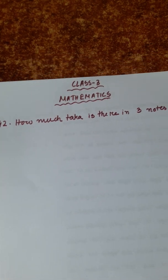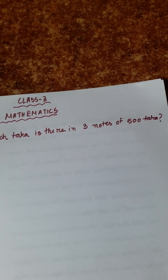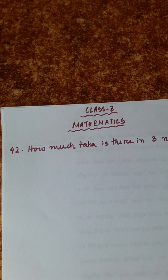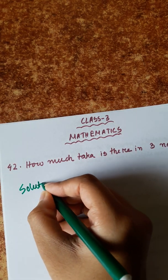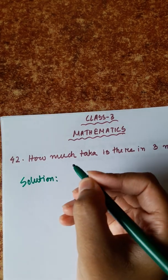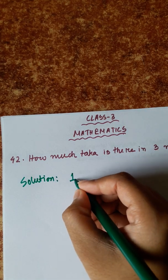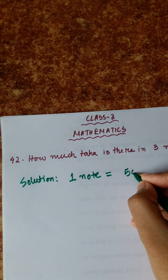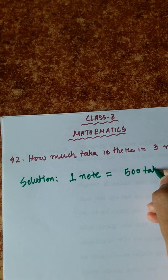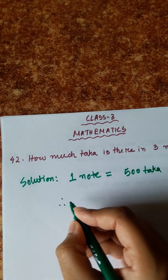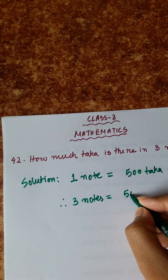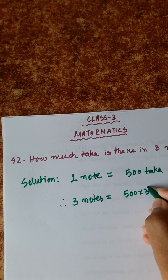Number 42: How much taka is there in 3 notes of 500 taka? Solution: 1 note is equal to 500 taka. Therefore, 3 notes is equal to 500 multiplied by 3 taka.